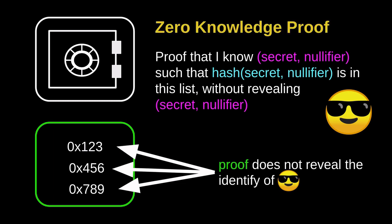This is called zero-knowledge proof — being able to prove that you know some information without revealing anything about the actual information. The math behind zero-knowledge proof used by Tornado Cash is called ZK-SNARK. Now notice that when we deposit and when we withdraw, we select two random numbers: the secret and the nullifier. What is this nullifier and what does it do?